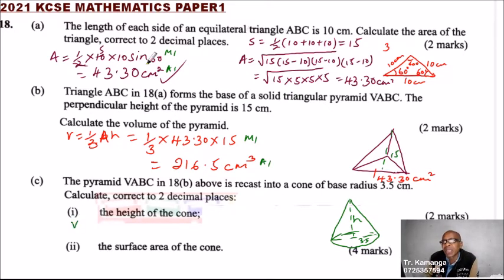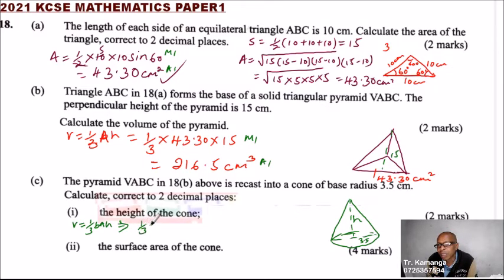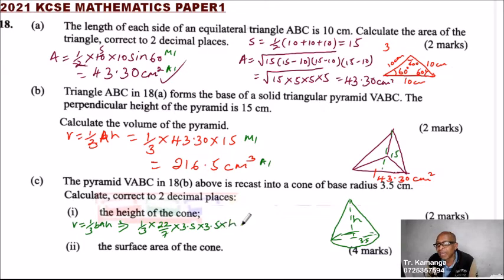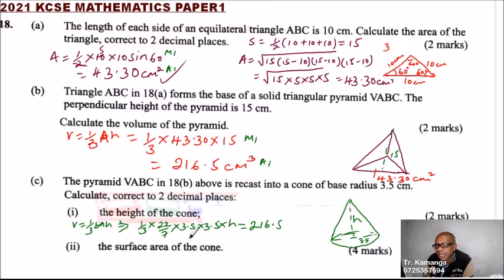The volume of the pyramid equals the volume of the cone, because the same material is used. Volume of a cone equals one third times base area times height, where base area is π r squared, which is 22/7 × 3.5 × 3.5 × h. This equals 216.5 cm³. We make height the subject.